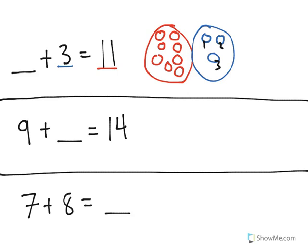Now we count how many are in this red group here, and that will be our missing number. When I count these up, I can see there are a total of 8. 8 plus 3 equals 11.